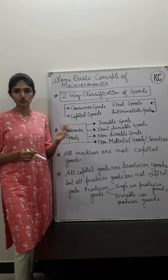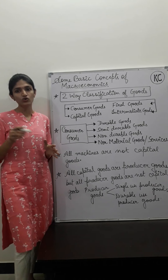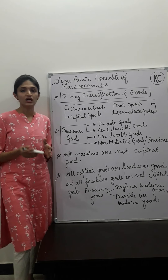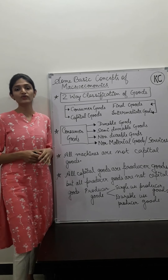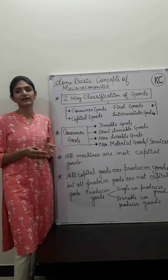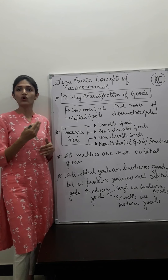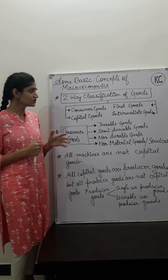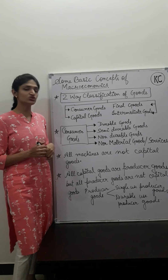Some goods are used by households or individual consumers, and some goods are used by producers in their further production — as raw material or as a fixed asset. So various characteristics of goods exist, and they serve both consumers and producers. This leads us to the classification of goods.